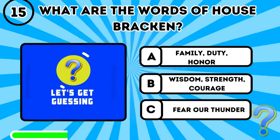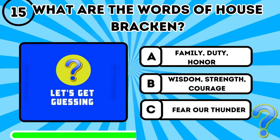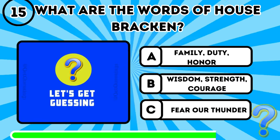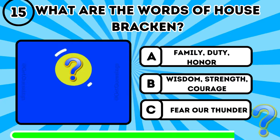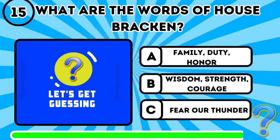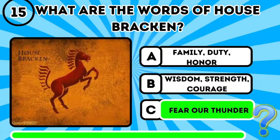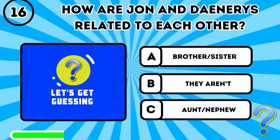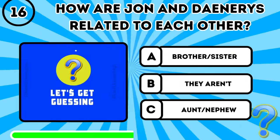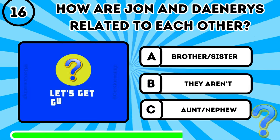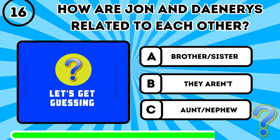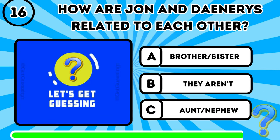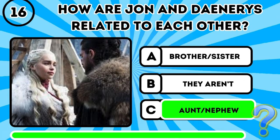Question 15: What are the words of House Bracken? It's C, Fear Our Thunder. Question 16: How are Jon and Daenerys related to each other? It's C, aunt and nephew.